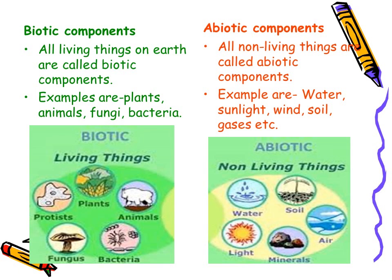What are biotic components? All living things on earth are called biotic components. Examples are plants, animals, fungi, and bacteria. All non-living things are called abiotic components. Examples are water, sunlight, wind, soil and gases.